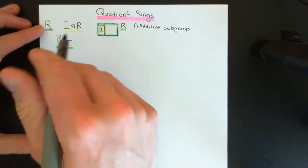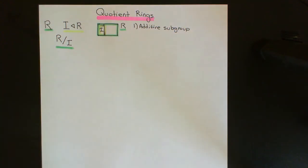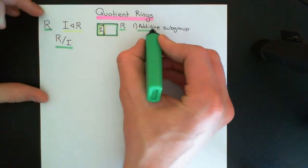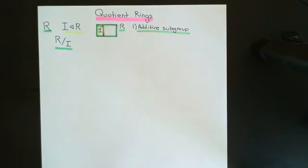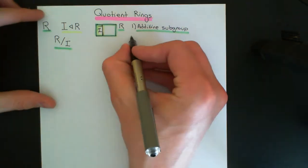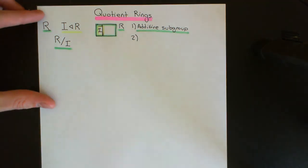If you imagine getting rid of the multiplication operation, all we have is a set with an addition operation satisfying the axioms of an abelian group. You can talk about additive subgroups within that additive group. All additive subgroups will indeed be normal subgroups within the ring because the ring is an abelian group as far as addition is concerned. That's the first criterion: the ideal is an additive subgroup when you just think about addition.